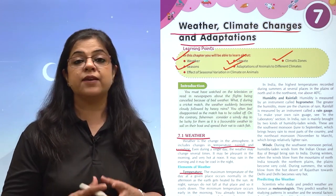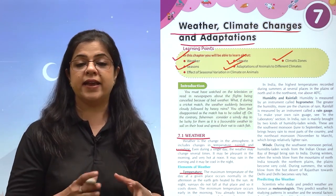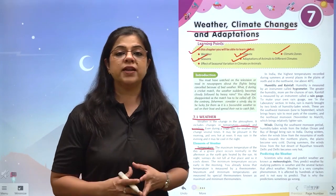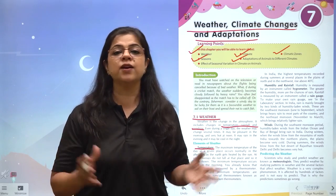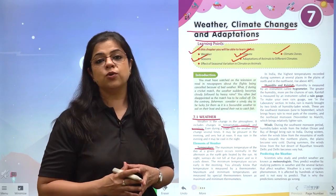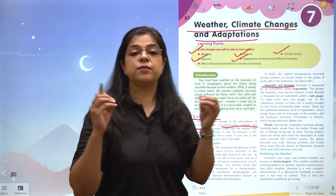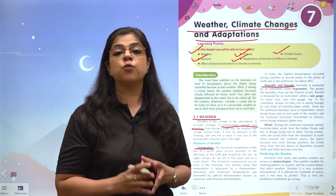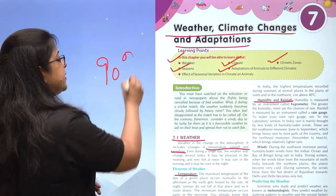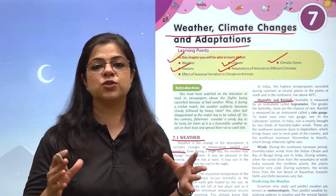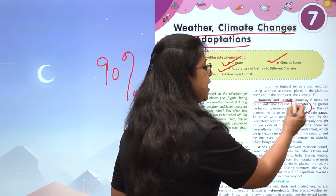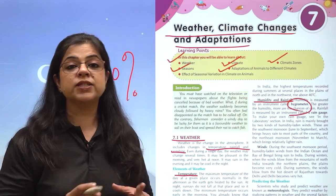The first element of weather is temperature. In summers, temperatures can be very hot in deserts and plains, while mountain areas mein temperature low hota hai - they are cool. The second element is humidity and rainfall. Humidity ka matlab hai environment mein jo air hai, us ke andar water vapor kitna hai. When water vapor reaches approximately 90 percent, it begins to rain. Humidity measure karte hain hygrometer se, and rain is measured by a rain gauge.